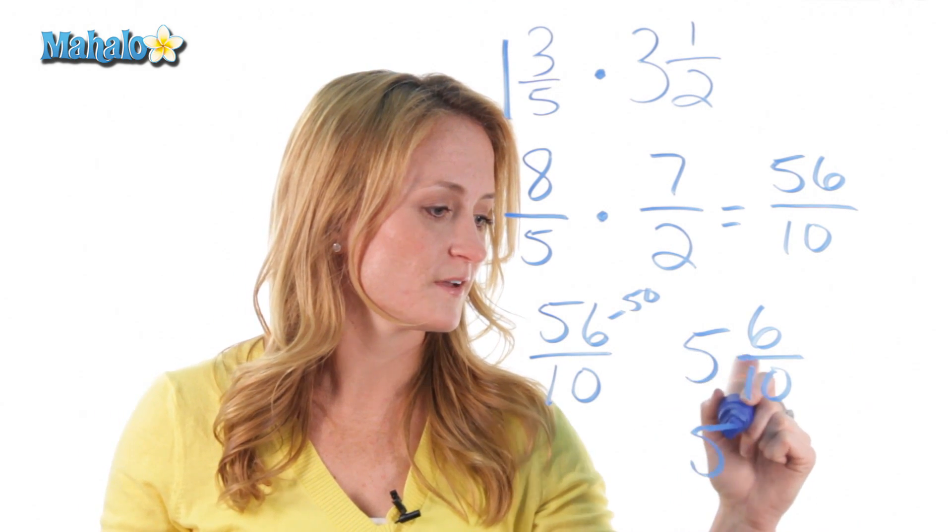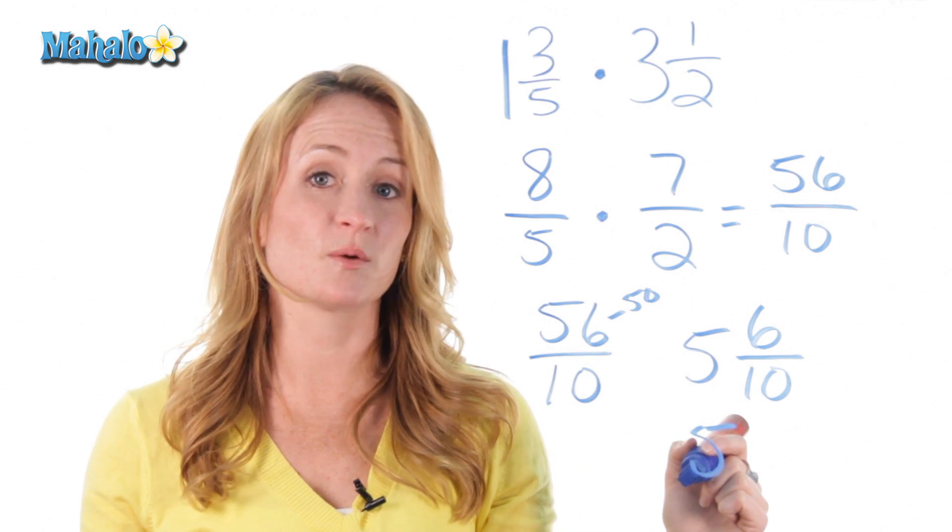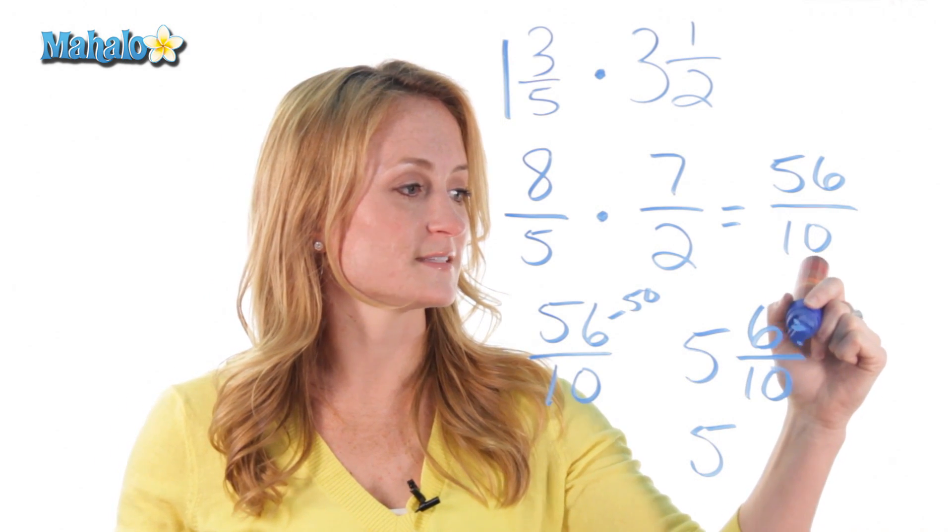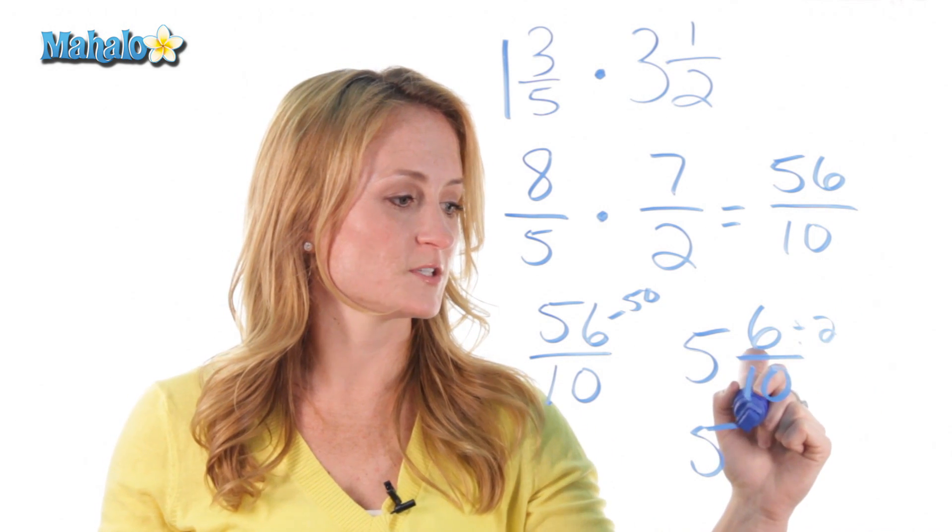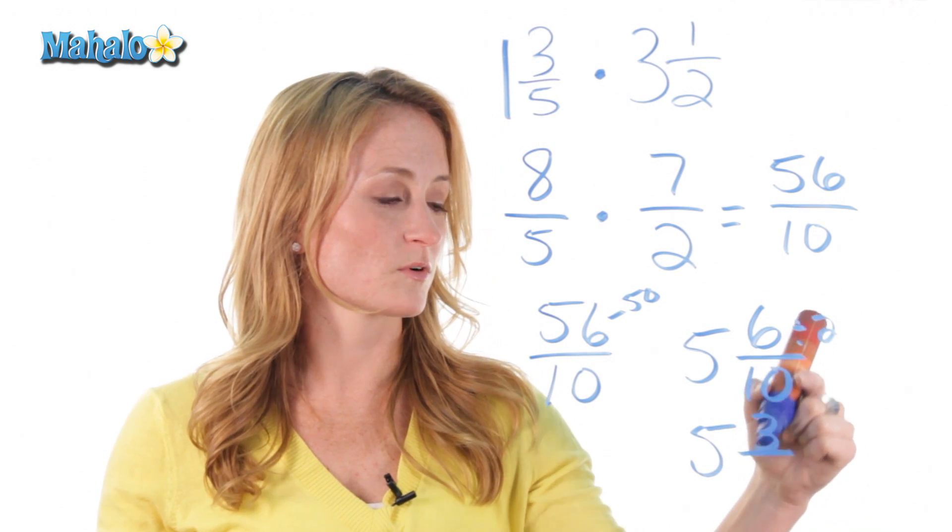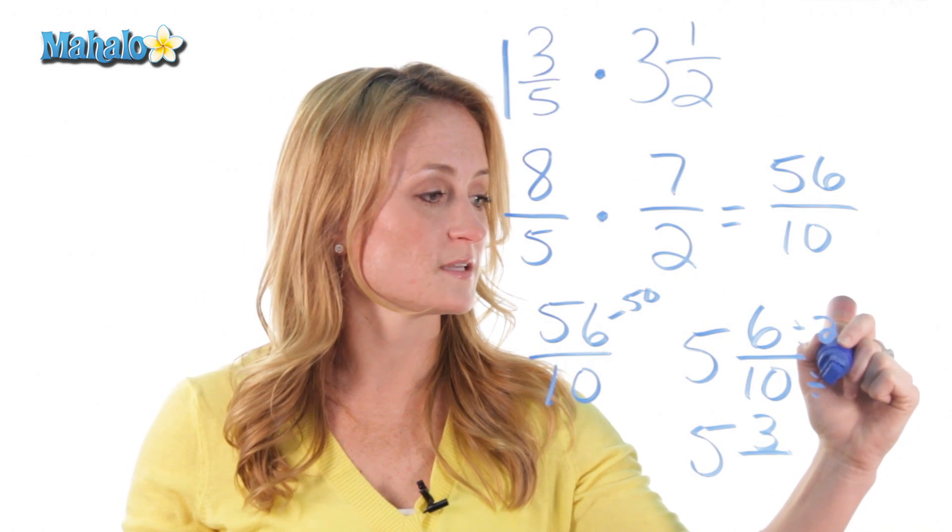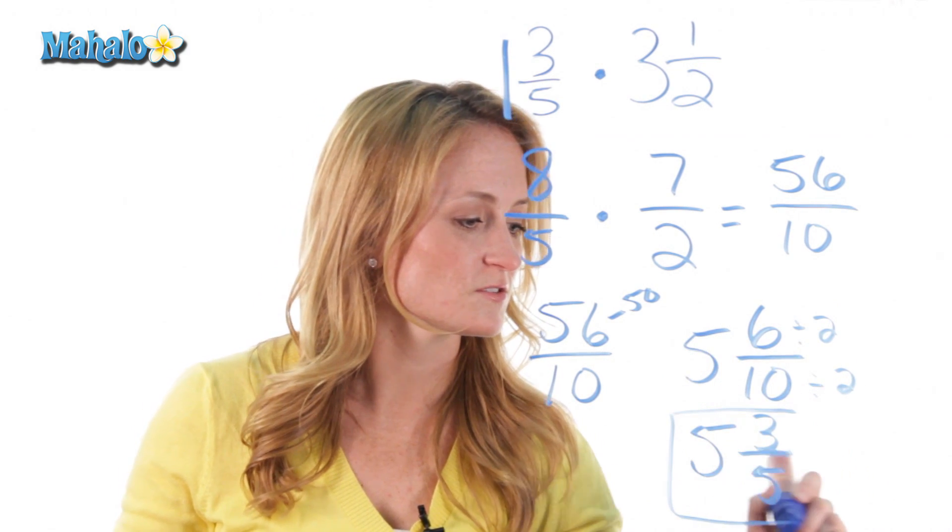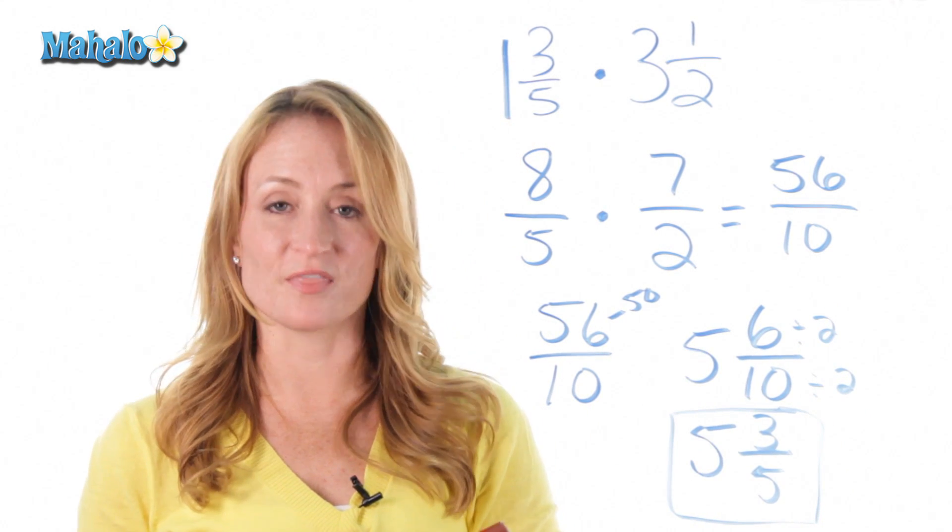So we bring down the 5 and we're going to reduce this. What number goes into both 6 and 10? That's 2. So we're going to divide the top by 2. 6 divided by 2 is 3. And we're going to divide the bottom by 2. 10 divided by 2 is 5. So our final answer to this problem is 5 and 3 fifths.